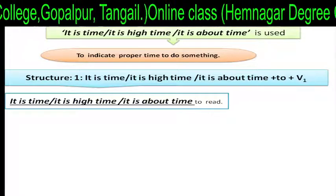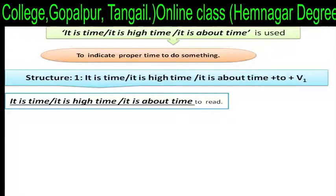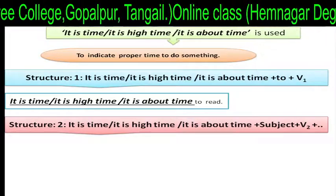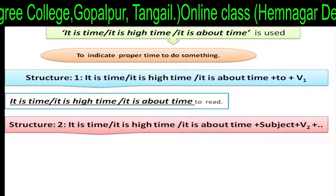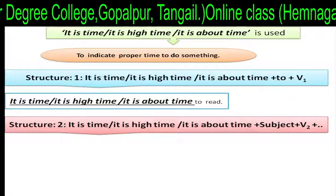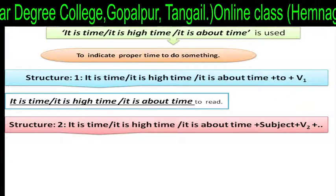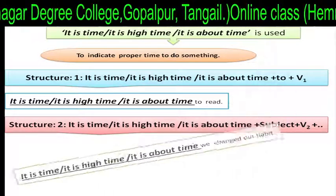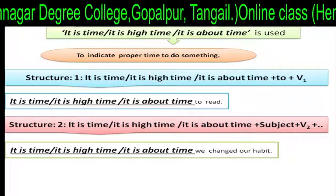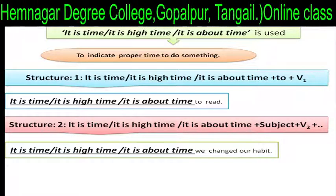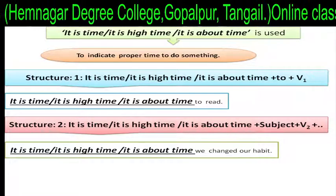For example: 'It is time' or 'it is high time' or 'it is about time to read.' Structure two: 'It is time' or 'it is high time' or 'it is about time' plus subject plus V2 plus extension. For example: 'It is high time' or 'it is about time we changed our hearts.'